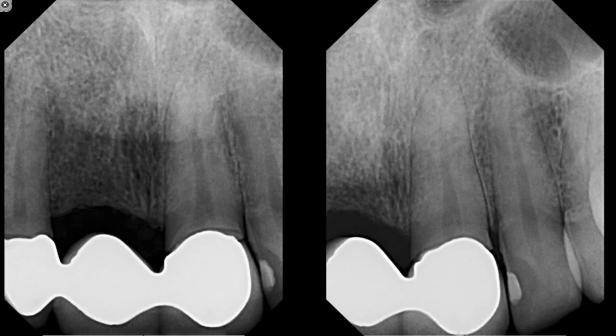However, we often forget what the cause of the necrosis is. This bridge was about ten years old and apparently not a very good fit, because as you can see, there are open margins around both abutments. When you have open margins, you will end up having leakage, and that leakage causes the pulp to die as a result of bacterial contamination underneath the crown.